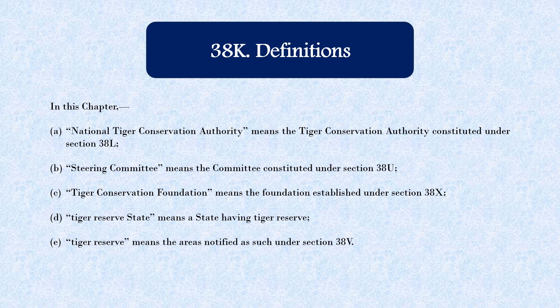In Section 38K of this chapter, it talks about the definitions of some important terms. The National Tiger Conservation Authority means the authority that holds the power to select any committee, create a foundation, or declare any area as a tiger reserve, and they have the control to save the population of tigers.